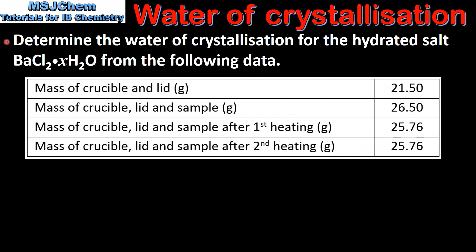Next we'll determine the water of crystallization for the hydrated salt BaCl₂·xH₂O from the following data. In this table we have the mass of crucible and lid, the mass of crucible lid and sample, the mass of crucible lid and sample after first heating, and after second heating. Note that the mass after first and second heating are the same — this is what is meant by heating to constant mass.